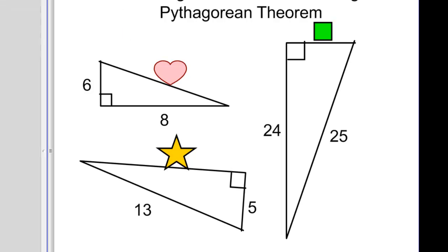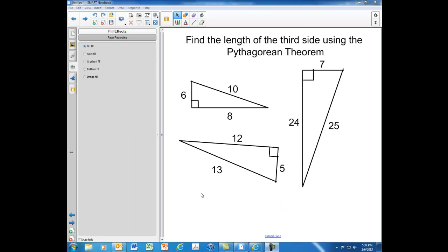Okay, so now when a student comes to the board, all he does is tap on the heart, and it flies away. He taps on the star, it flies away. He taps on the box, and it fades out.